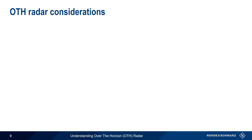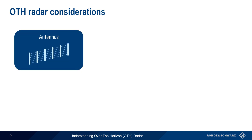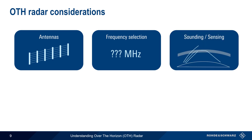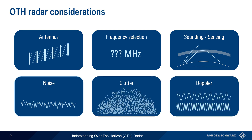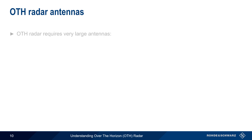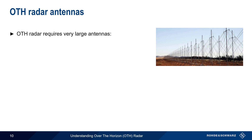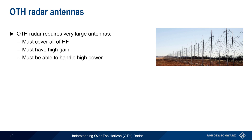Next, we'll look at some important aspects or considerations for OTH radar: antennas, frequency selection, sounding or sensing, noise, clutter, and Doppler processing. Very large antennas are one of the distinguishing features of over-the-horizon radars. OTH antennas must support operation over most or all of HF, and antenna size is generally inversely proportional to frequency. In addition, these antennas must also have high gain and be able to handle very high transmit powers.